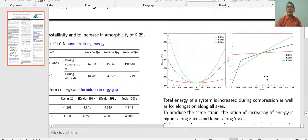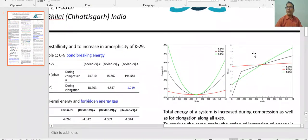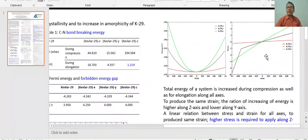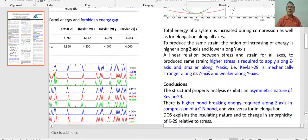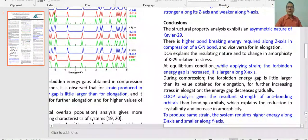The total energy of system is increased during compression as well as elongation along all axes, as observed in this plot. This is the plot between stress and strain. To produce the same strain, the ratio of increase of energy is higher along Z-axis and lower along Y-axis. A linear relation between stress and strain for all axes. To produce the same strain, higher stress is required to apply along Z-axis and smaller along Y-axis. So one can say the Kevlar 29 is mechanically stronger along Z-axis and weaker along Y-axis.